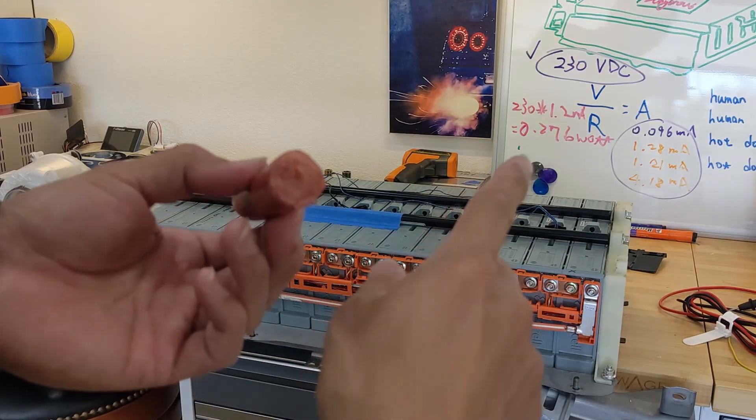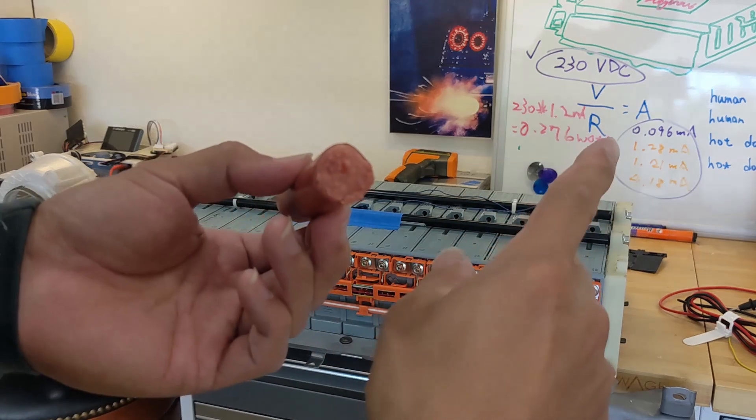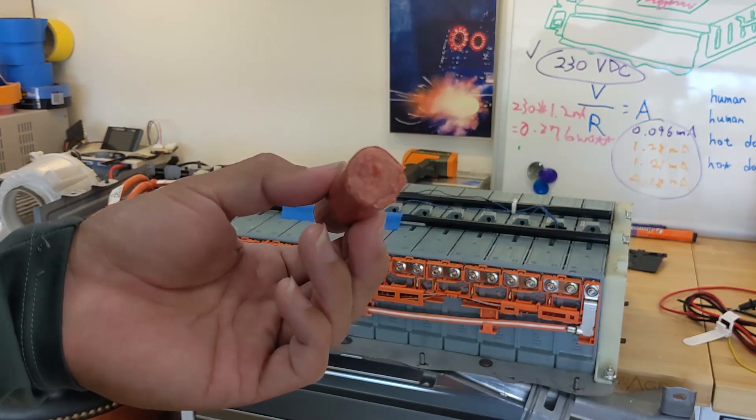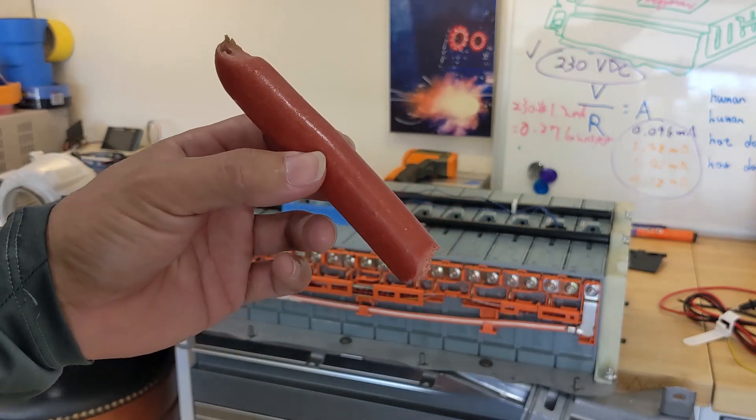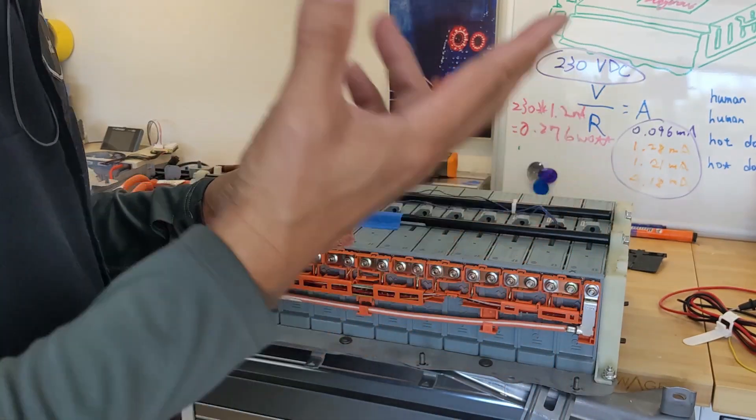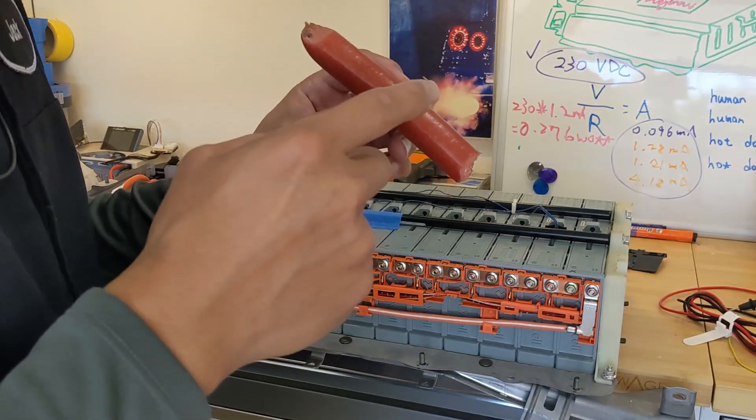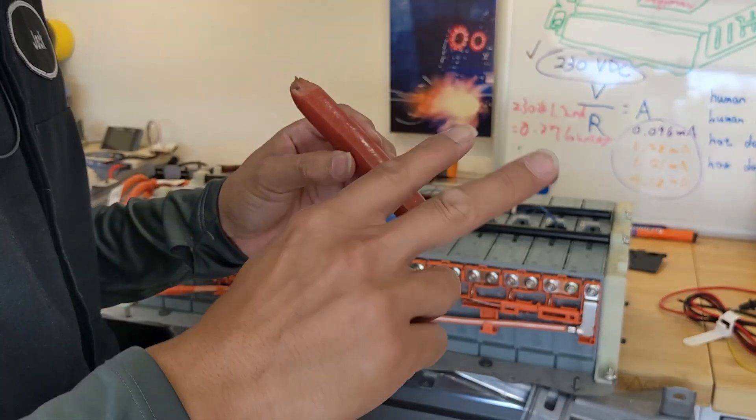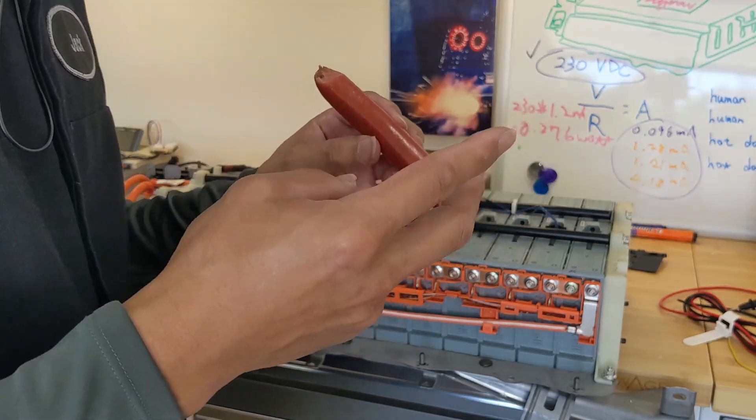According to the calculation, this has four times the current that went through my finger going through this hot dog. And if I can feel the tingling, that must be a big tingling.